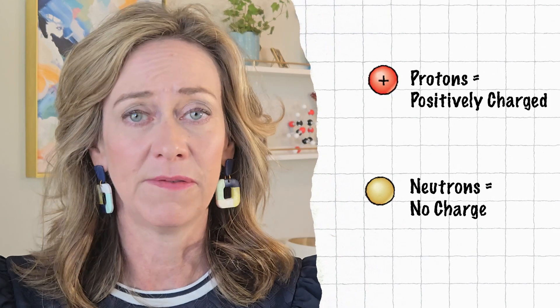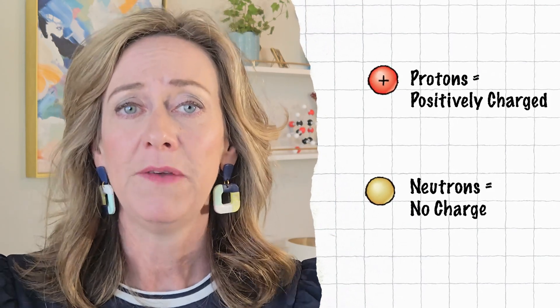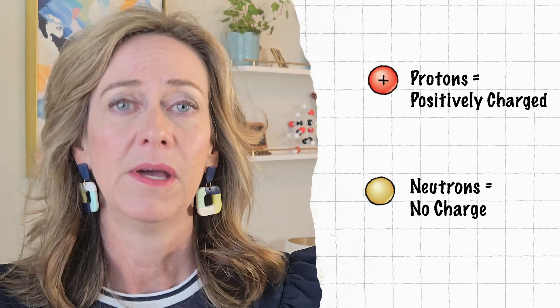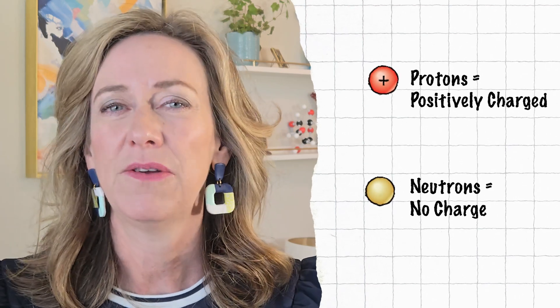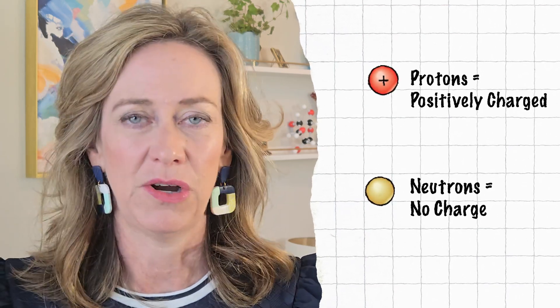Protons are positively charged — just remember P for proton, P for positive. Neutrons, on the other hand, are neutral. They don't have any charge.